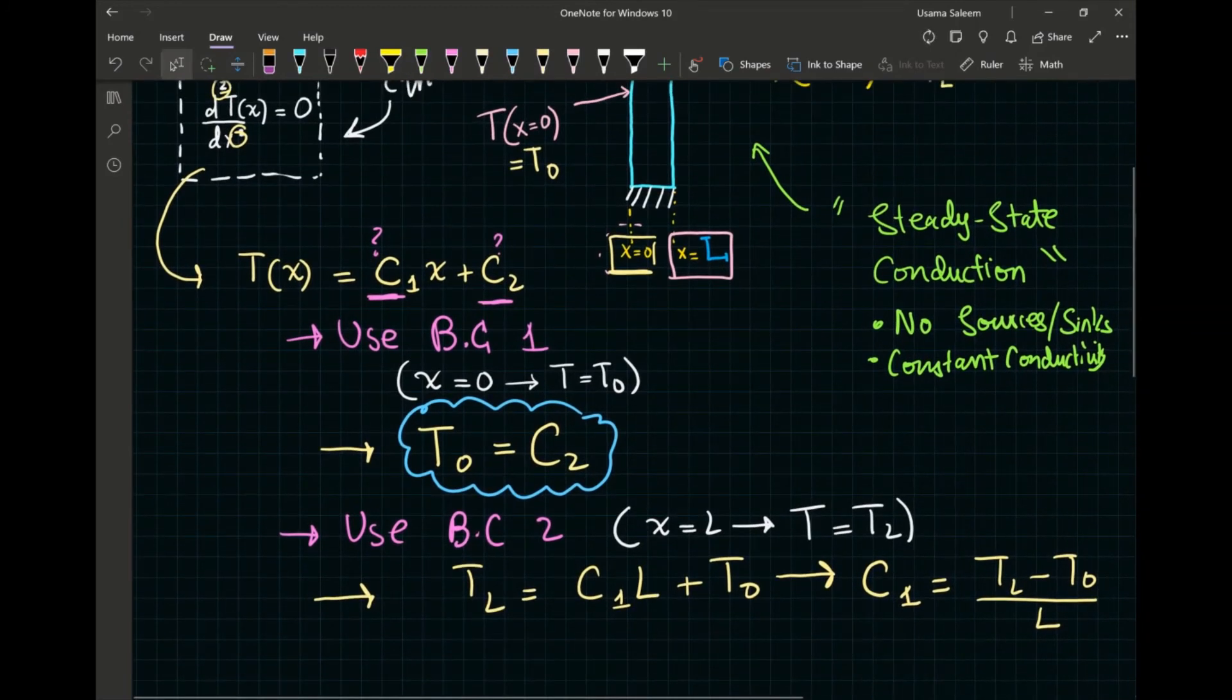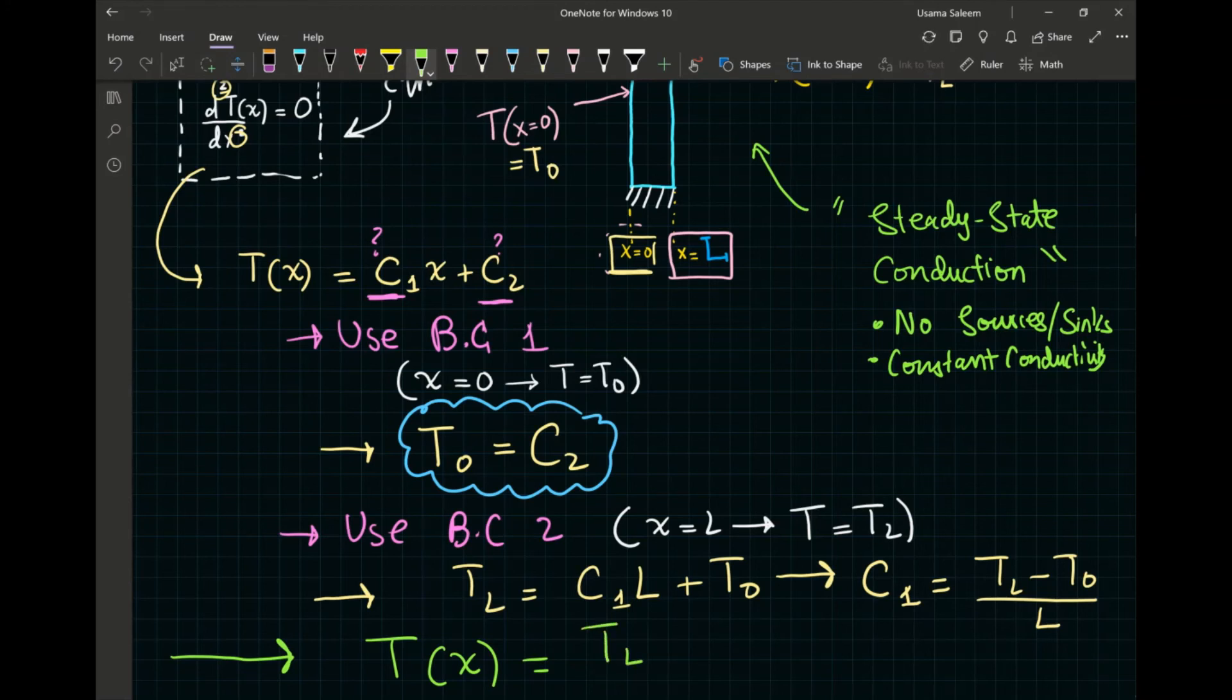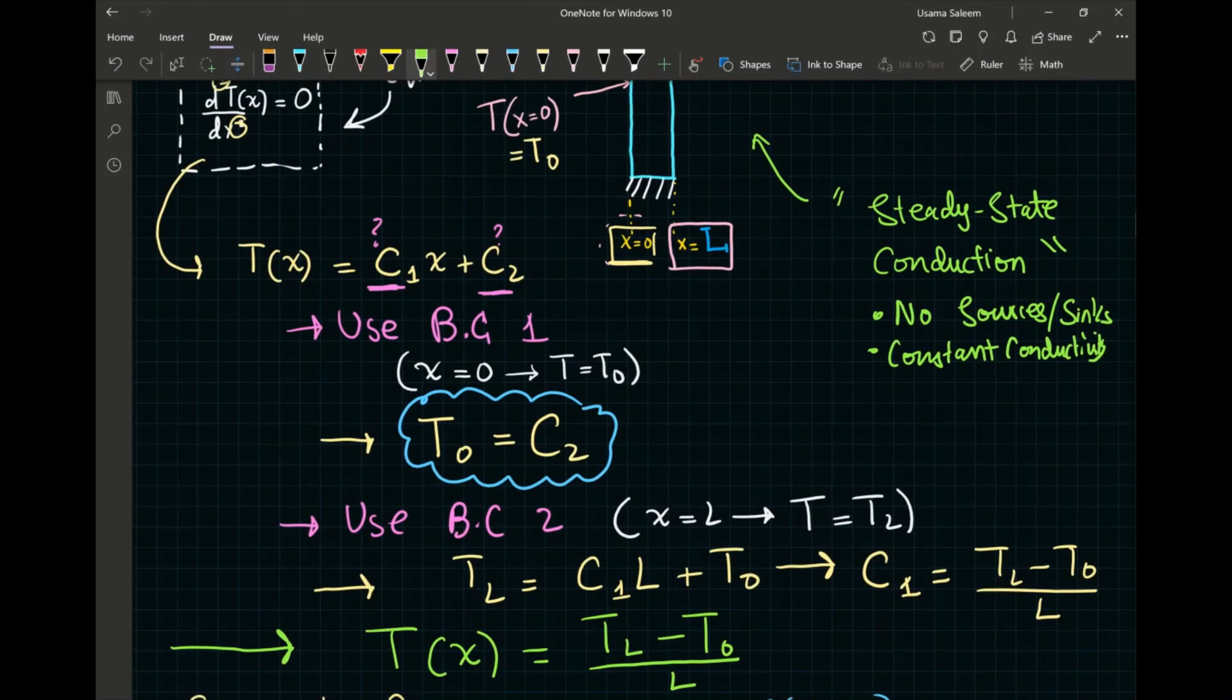All right, so our final solution comes out to be T as a function of x is equal to T at x equals L minus T₀ divided by L multiplied by x, of course, plus T₀. So that, ladies and gentlemen, is my particular solution, that is the solution to my boundary value problem.